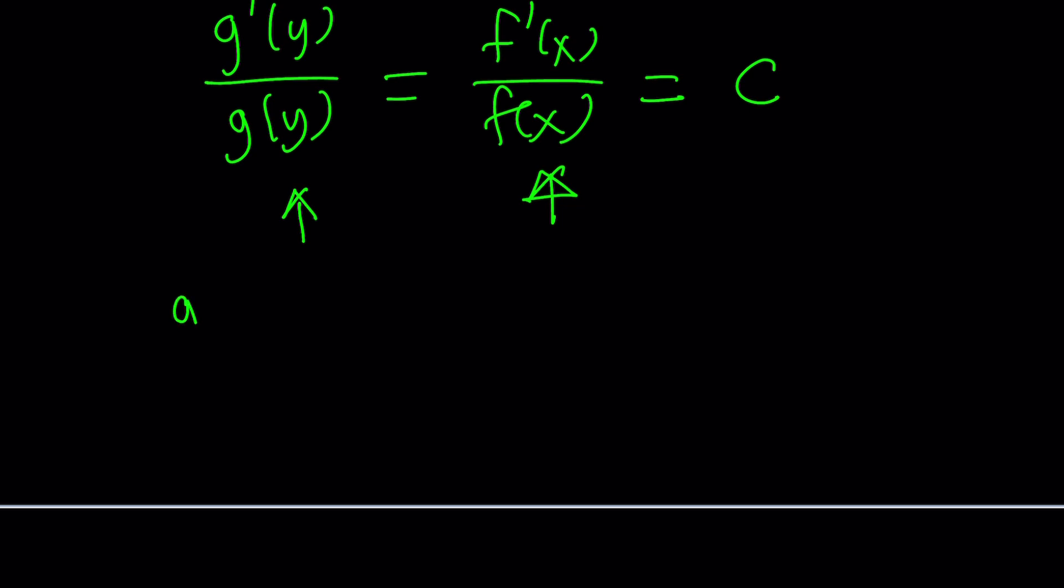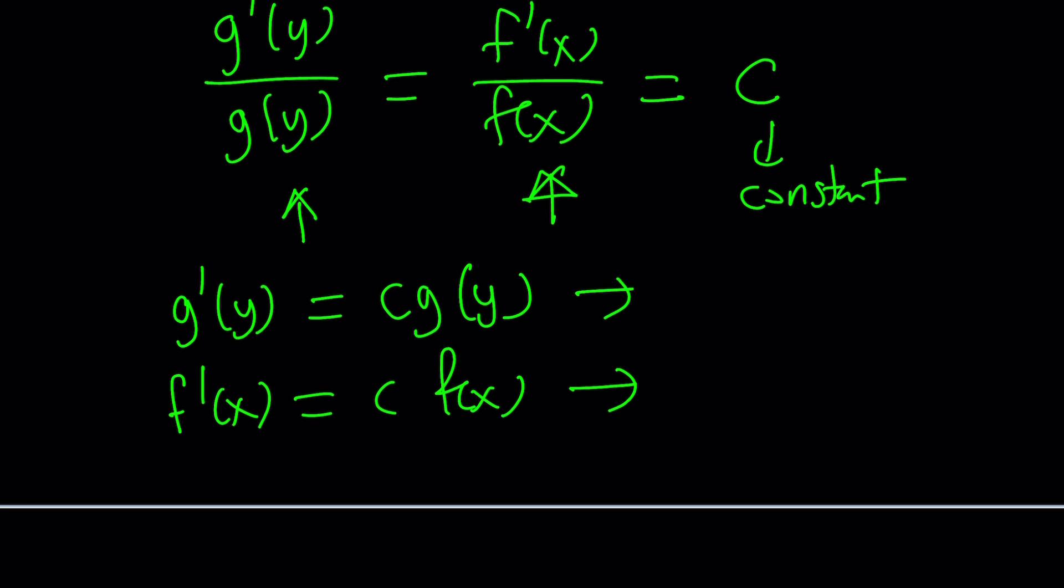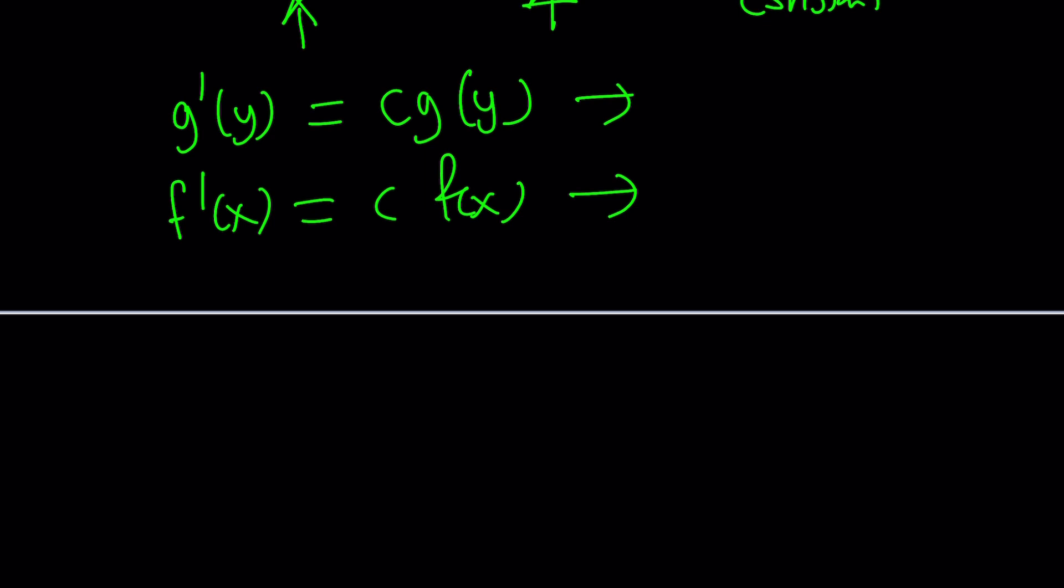And this gives us a beautiful equation. Actually, two equations, two ordinary differential equations. So we can write this as g prime of y equals gc, which is a constant. By the way, this is a constant. I can't emphasize that enough. Not like a constant function, but it's a constant. And then f prime of x equals c times f of x. We're going to be solving each of these. Let's put them on the same side.